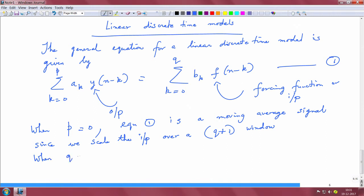When q equals 0 with a_0 equal to 1, this is interesting because we have y(n) equals b_0 f(n) minus summation a_k y(n-k), k going from 1 to p.